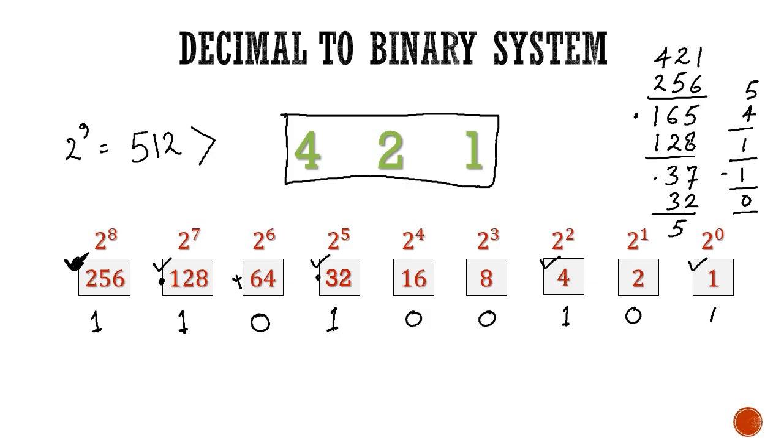Therefore, the sum of 256, 128, 32, 4 and 1 will give me 421. And the binary number which we have obtained is 1 1 0 1 0 0 1 0 1. So, this binary number is equivalent to 421 in decimal system.